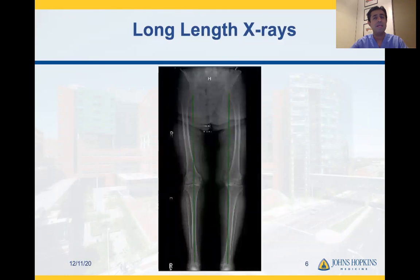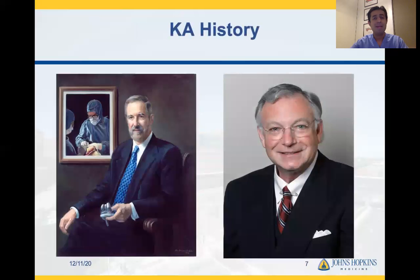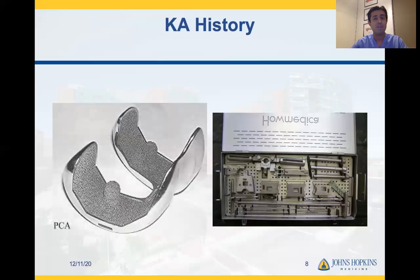Assume you have a long-length radiograph of a patient. On the right knee, there is a neutral mechanical axis, and this is what a mechanically aligned total knee would look like. On the left knee, there is a slight degree of varus, and this is what a kinematically aligned knee would look like. Kinematic alignment has an interesting history at Johns Hopkins with David Hungerford and Ken Krakow. They both came up with this concept of measured resection and anatomic alignment, which was the precursor to kinematic alignment. Along with the alignment philosophy, they also developed the porous coated anatomic implant using Stryker HowMedica instrumentation, which was groundbreaking at that time.